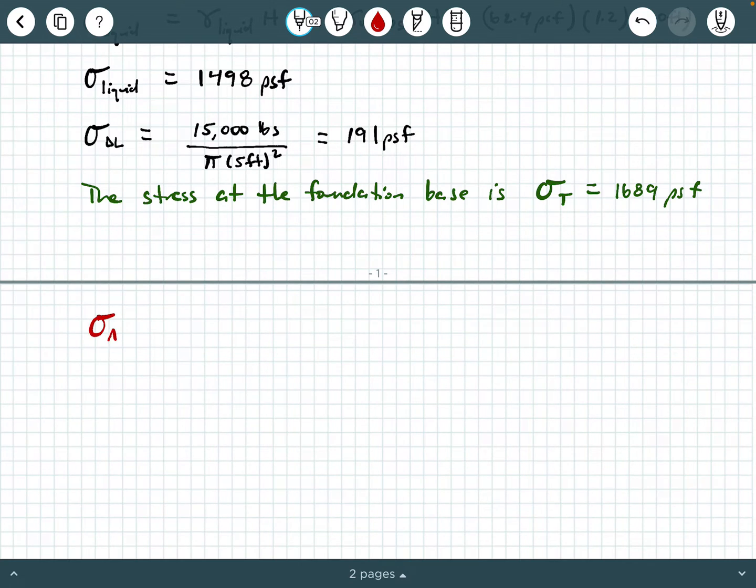We're gonna say σ_A is gonna be equal to q times, and we're gonna use our Boussinesq formulation for a circularly loaded area: one minus one divided by [(r/z)² + 1] raised to the three halves power, and we can substitute our values in here.